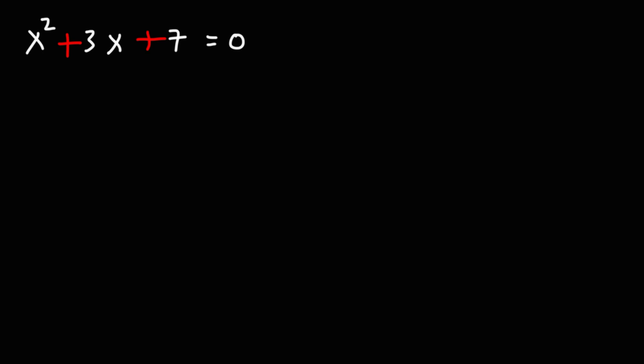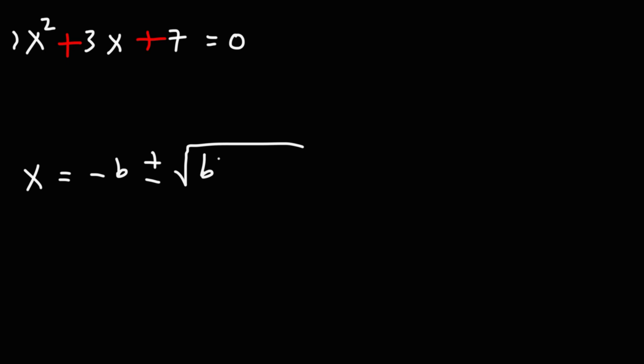Now, for this example, instead of a binomial, we have a quadratic equation that's a trinomial. Go ahead and find a solution to this one. We can't factor this trinomial — if you were to try to find two numbers that multiply to 7 but add to 3, it's not going to work. You have 1 and 7, but you're not going to get any integers that give you a solution. So we can't factor this trinomial. What we can do is use the quadratic formula, which is x equals negative b plus or minus the square root of b squared minus 4ac, divided by 2a.